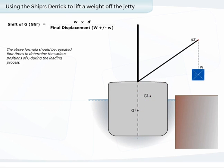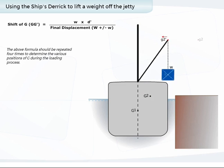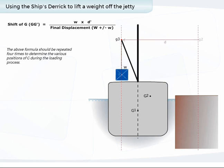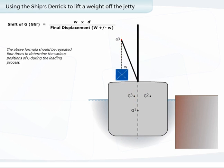Third, the horizontal movement of G when the derrick swings the weight from the quay side over the final position of the weight on the deck, and D is the distance moved by the derrick head. Fourth, the vertical movement of G when the weight is landed on the deck, where D is the vertical distance from G to the center of gravity of the weight on the deck.